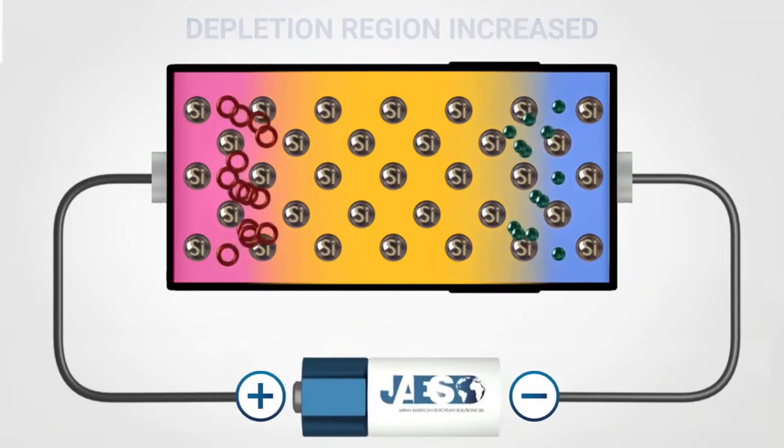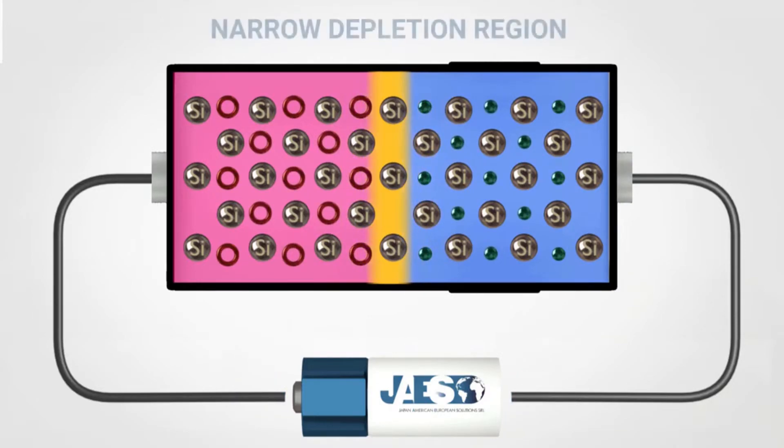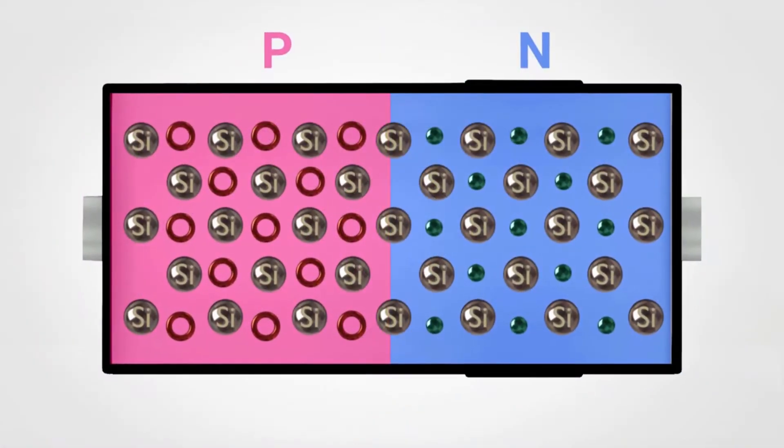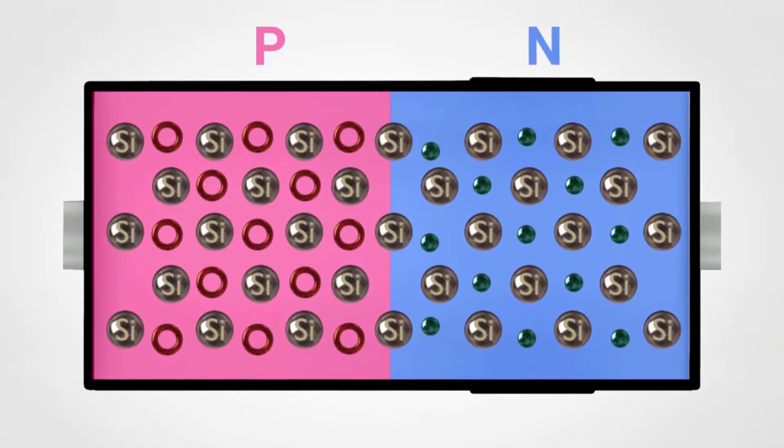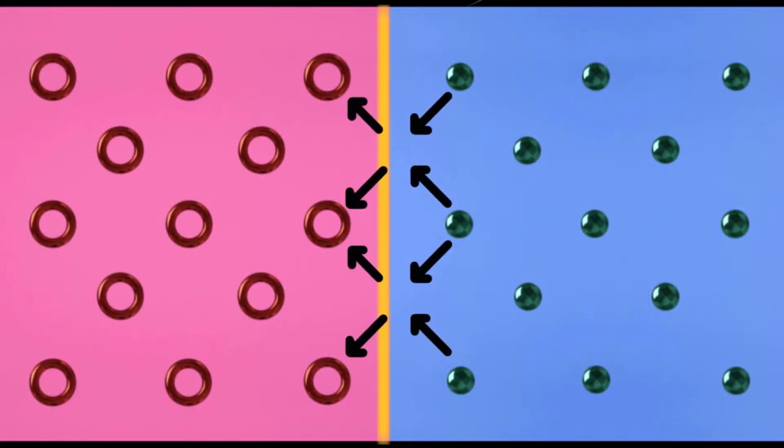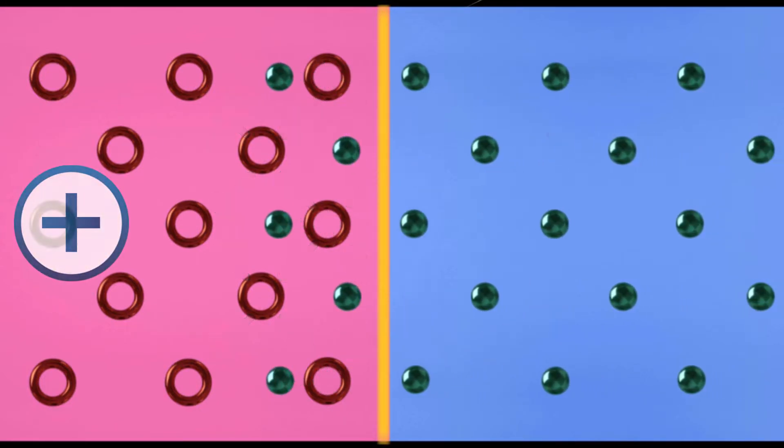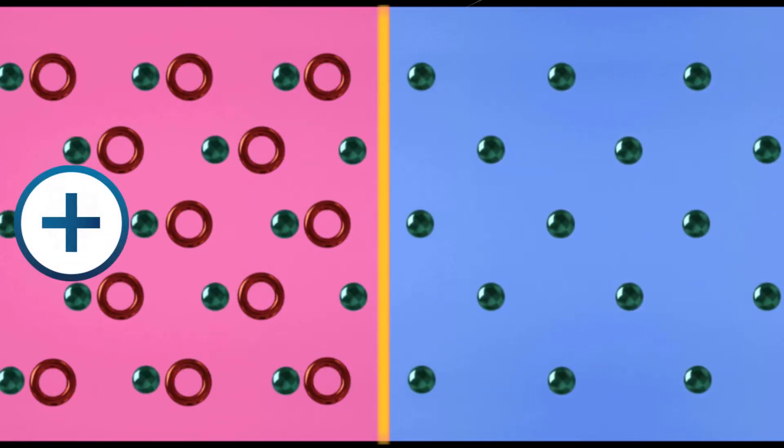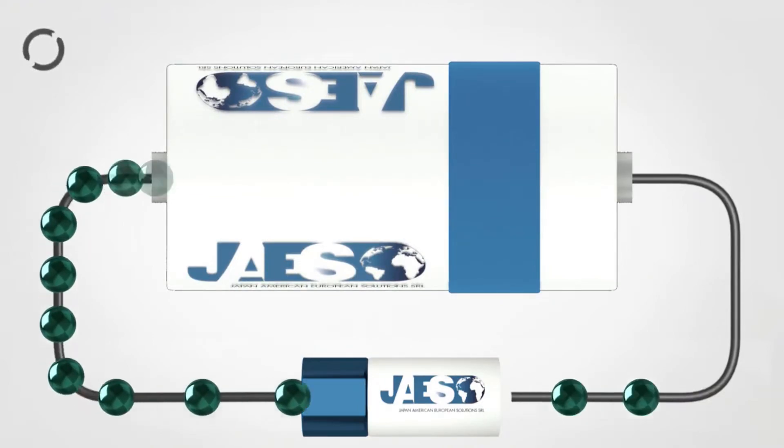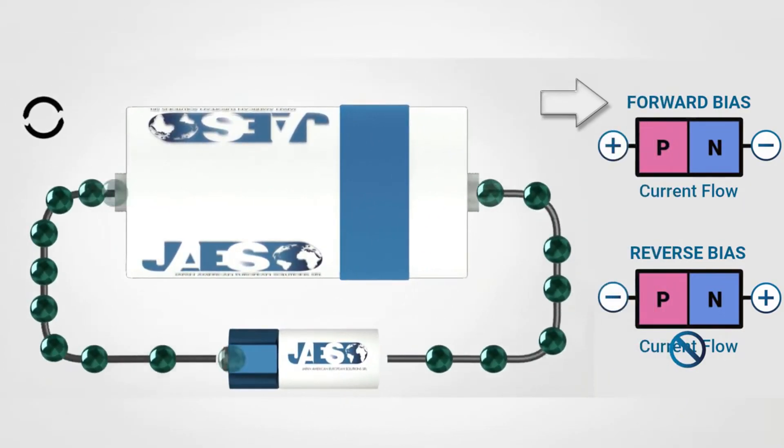By reversing the battery's poles connection, a forward bias condition is created, and the depletion region narrows. Using a battery with a higher voltage than the barrier potential, the electrons, not meeting more resistance, are able to cross the barrier and occupy the holes available on the P-side. Thanks to the attraction of the positive pole of the battery, they continue to occupy the subsequent holes and thus flow out of the diode through the electrical circuit.